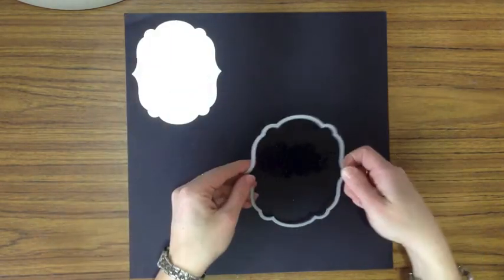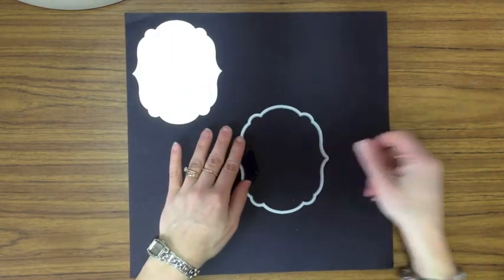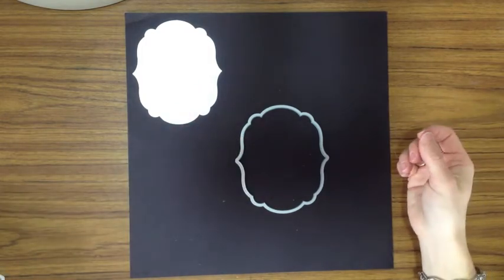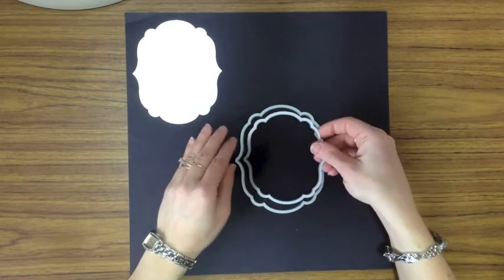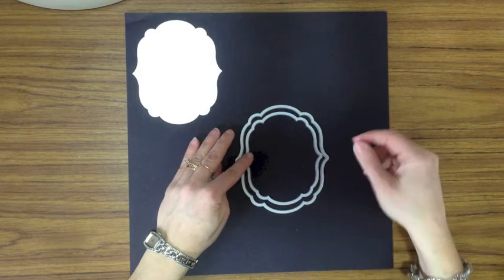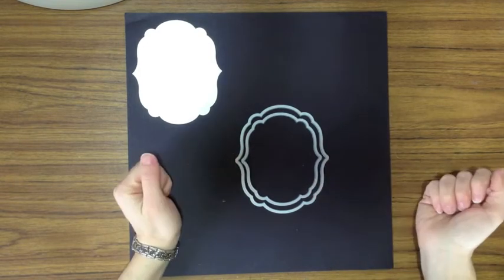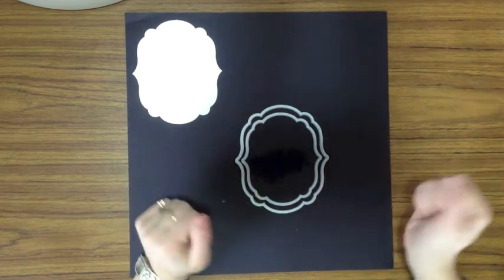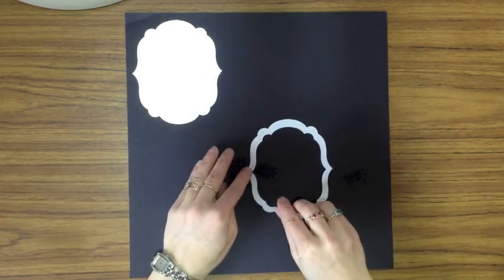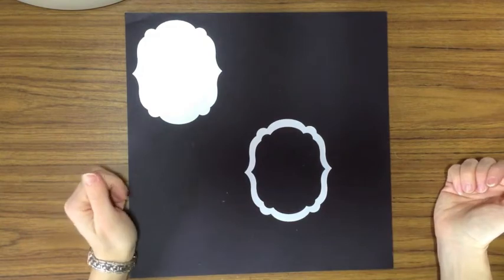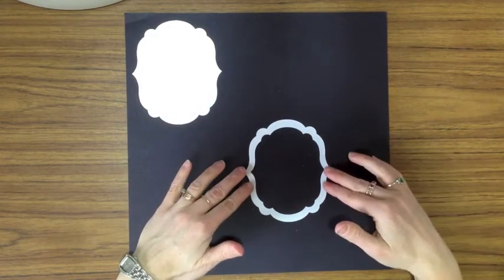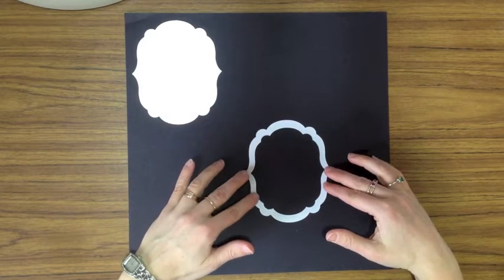After I did that, I took a piece of white scrap paper, just printer paper, and used the same framelit. Then I also used the framelit that was the next size down, put them together, and ran it through the Big Shot. When I was done, I had a little piece of paper that looks like this, and this is what I'm going to use as a mask to prevent the ink from going where I want it to go.